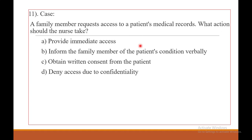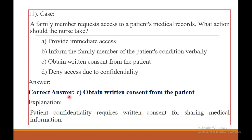Question eleven. A family member requests access to a patient's medical records. What action should the nurse take? A — provide the medical information freely. B — inform the family member of the patient's condition. C — obtain written consent from the patient. D — deny access. The correct answer is C — obtain written consent from the patient, as written consent is required for sharing medical information.